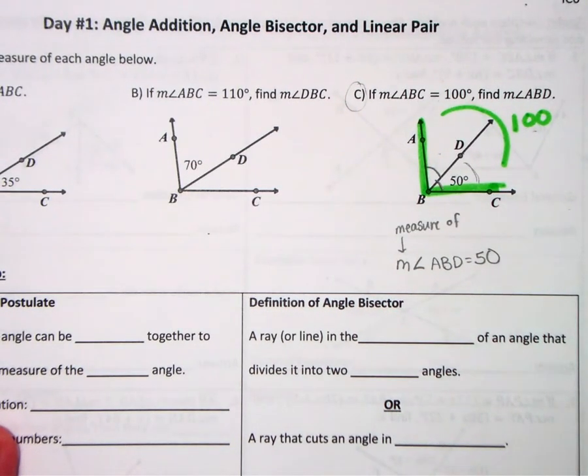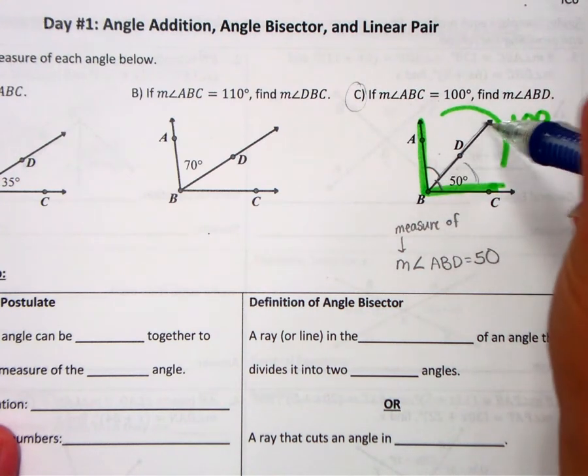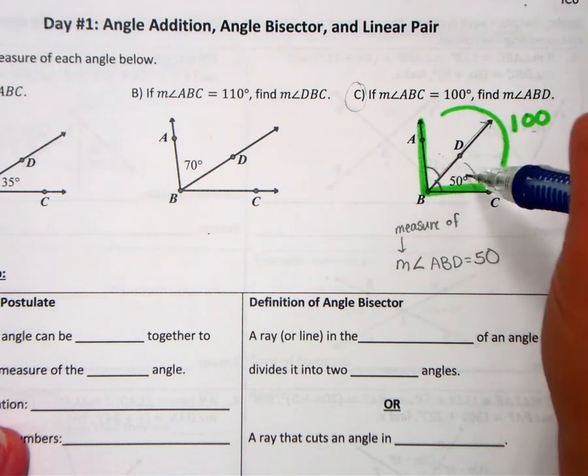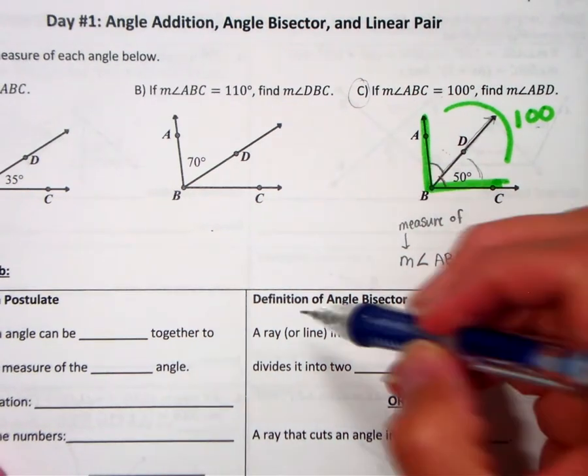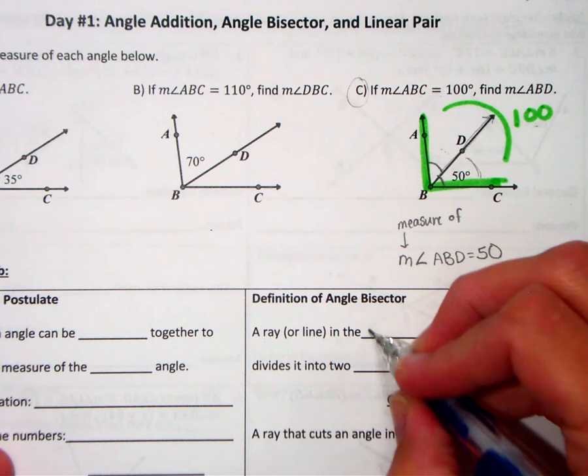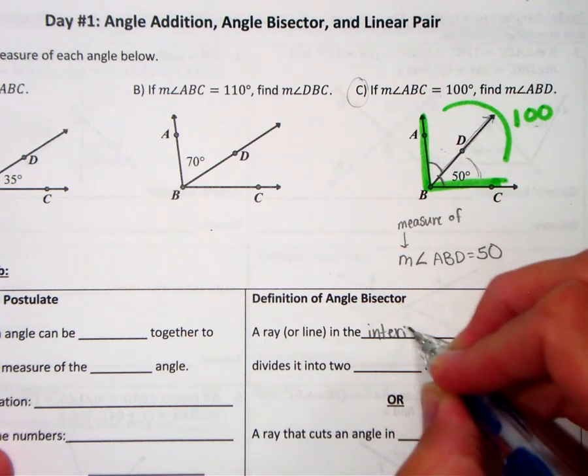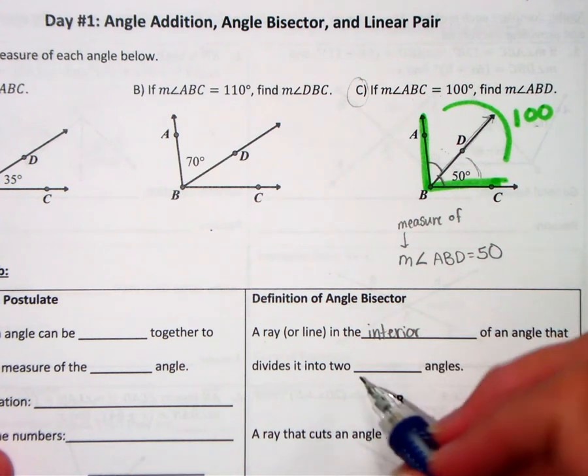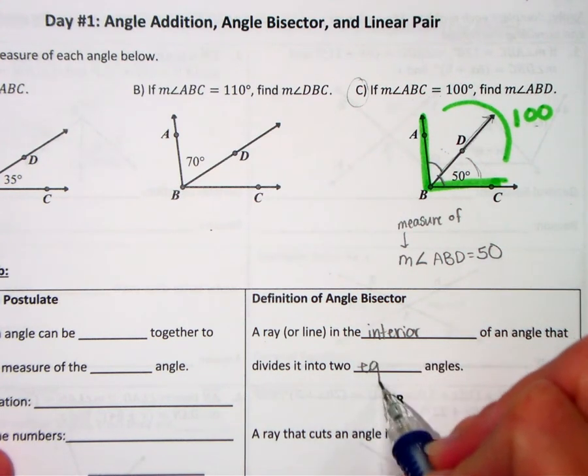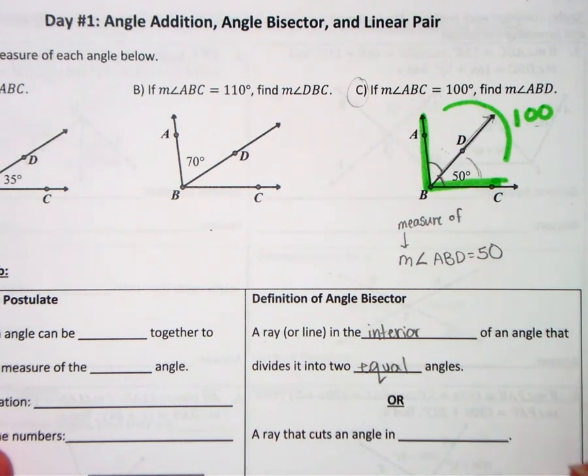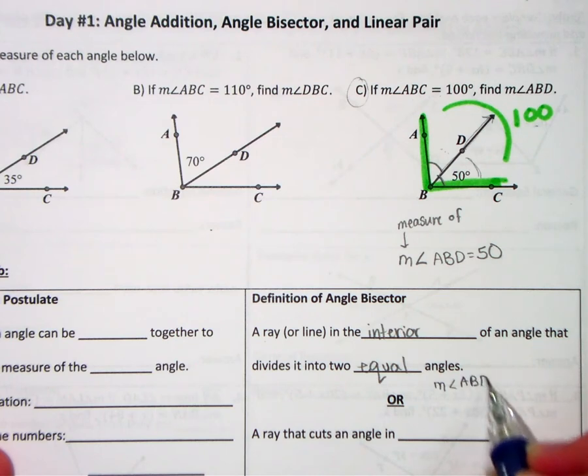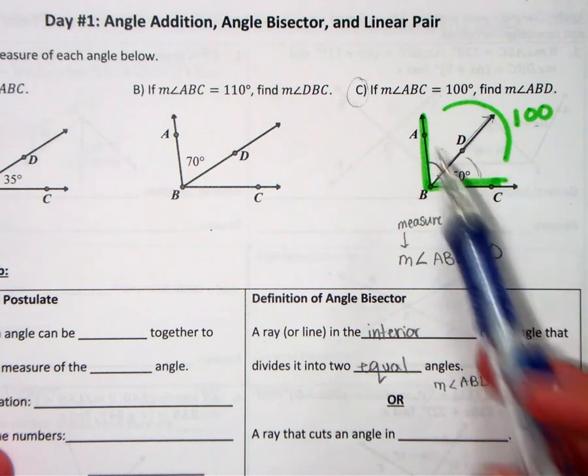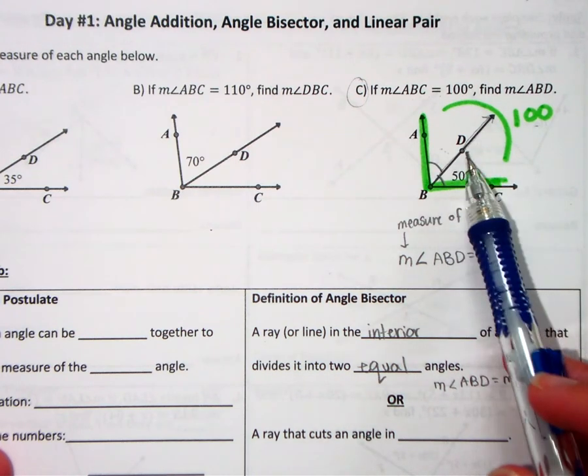Okay, so when a ray comes through an angle and creates two equal parts, that ray is called an angle bisector. So an angle bisector is a ray in the interior of an angle that divides that angle into two equal parts. So the two parts of this angle that are equal are the measure of angle ABD, so that's ABD, and DBC.